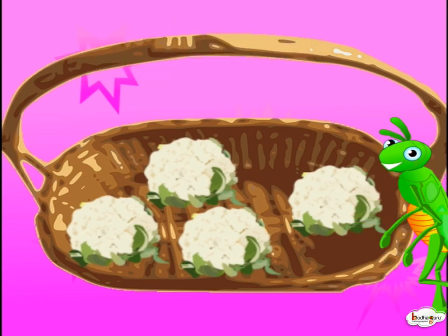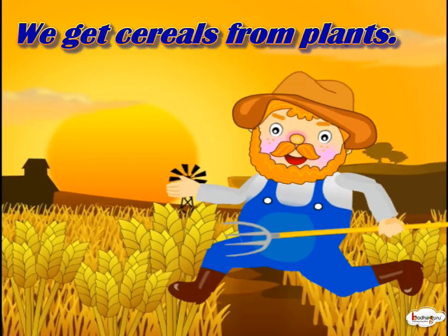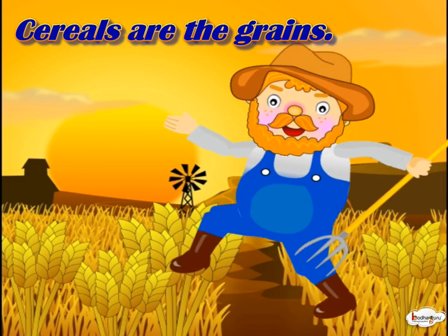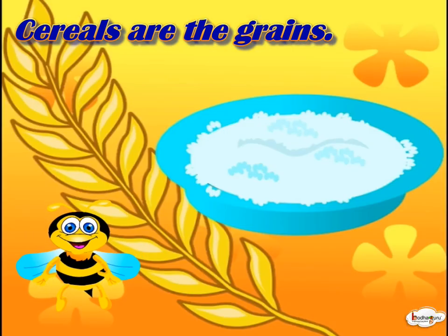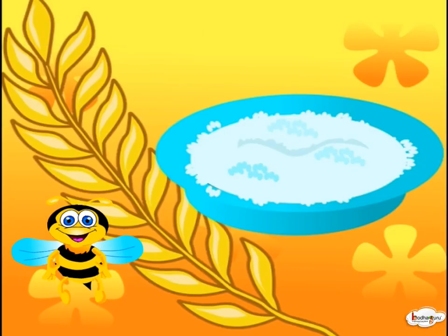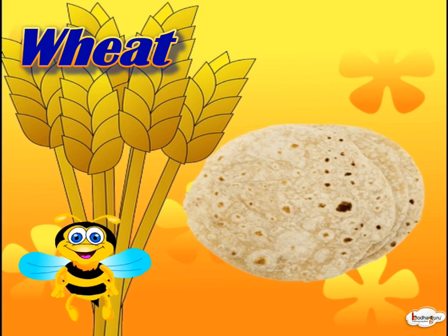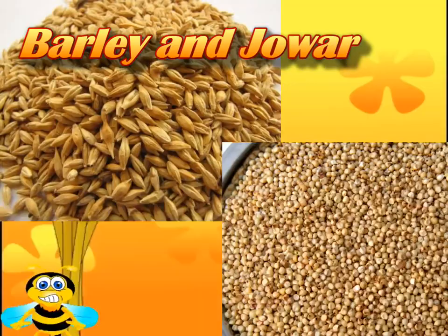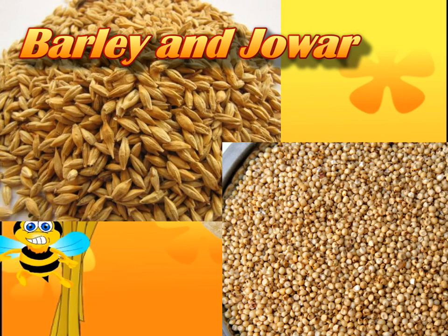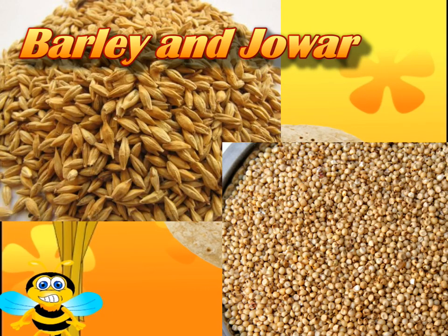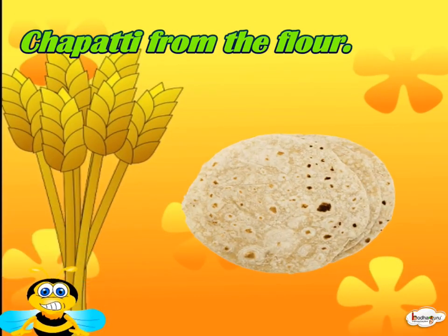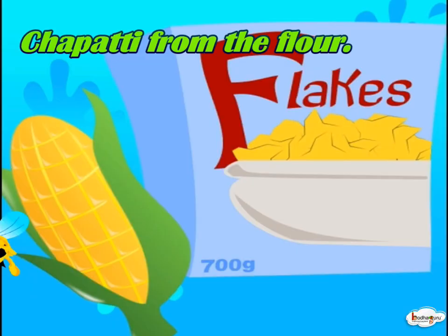We get cereals from plants. Cereals are the grains that can be eaten. Rice, wheat, maize, barley and jore are some of the cereals that we eat. We make chapati from the flour of wheat, maize and gram.